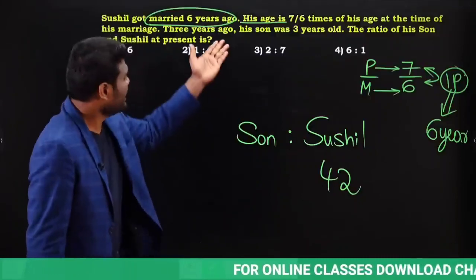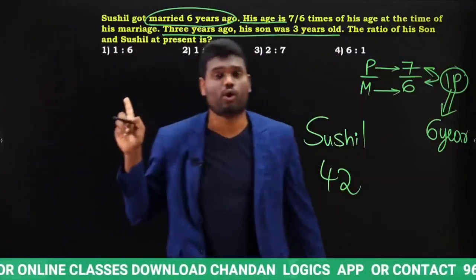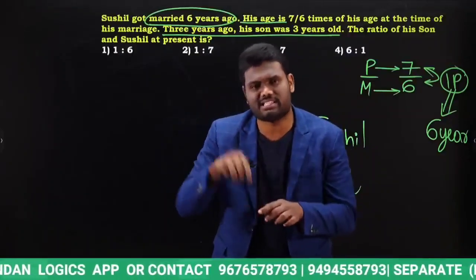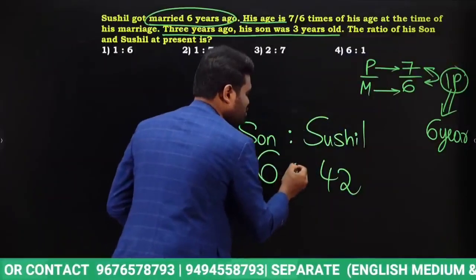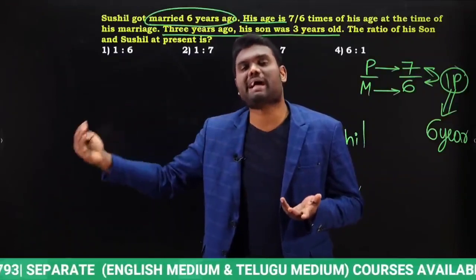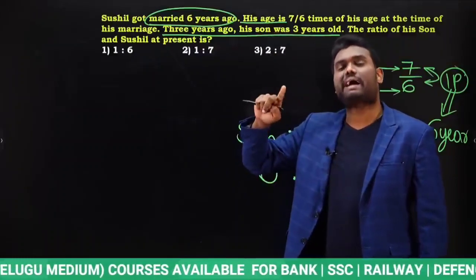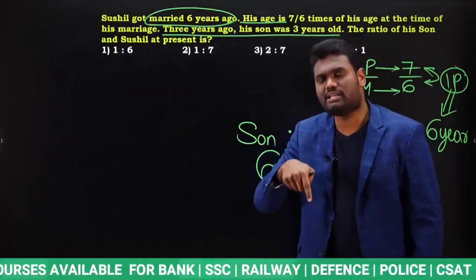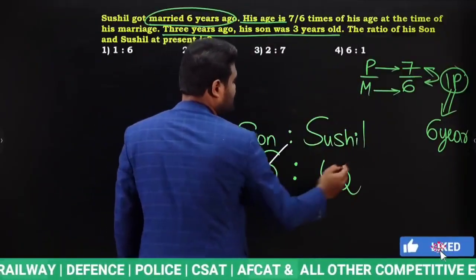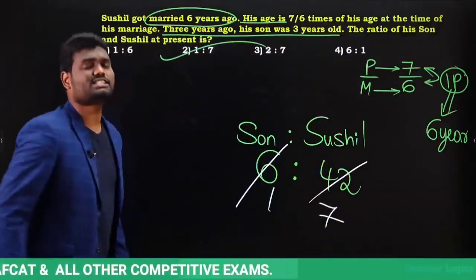Now find the son's present age. Three years ago, the son was 3 years old — so present age is 3 plus 3, which is 6 years. Now calculate the ratio: son's age 6 to Sushil's age 42. 6 cancels — the ratio is 1:7. Complete information was given in the question itself, solved in just a fraction of a second.